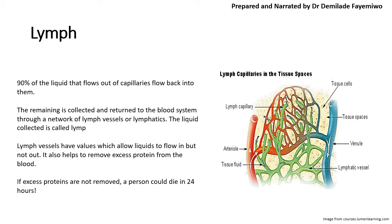Looking at this image, you can see the green vessels denoted as lymph capillaries — a different network from the arteries, veins, and venules. Lymph vessels have valves that allow liquids to flow in but not out, helping to keep fluid in vessels so we do not have swelling in parts of our bodies. They also help to remove excess protein from the blood — and if excess proteins are not removed, a person could die within 24 hours.